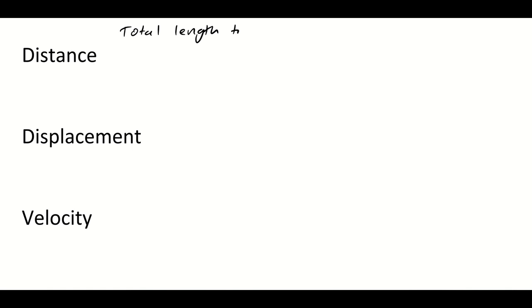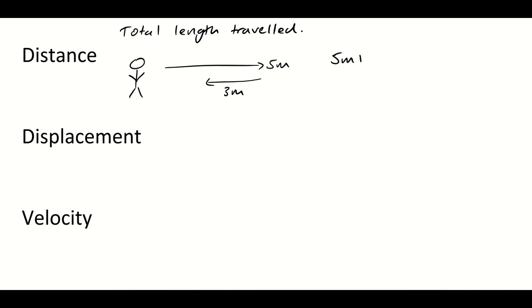Distance is the total length travelled. For example, we have a stickman who walks 5 metres in one direction, and then turns around and walks 3 metres backwards in the opposite direction. The total length he has travelled is 5 metres plus 3 metres, which is 8 metres. That's his total distance. It doesn't matter what direction he walks in — it's just about how far he walks. We call this a scalar quantity, because direction doesn't matter.